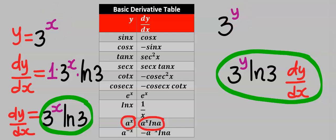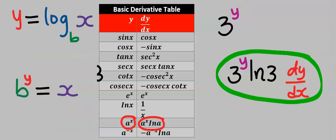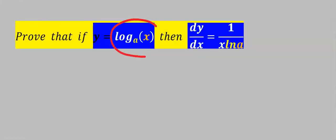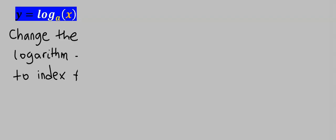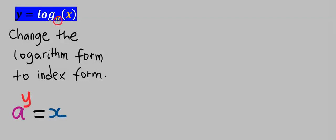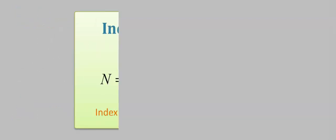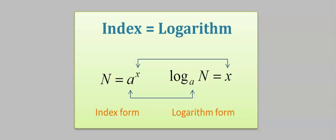With these basics in mind, we can now prove that the derivative of log X of base A is 1 divided by X times the natural log of A. To prove this, step number 1: change the logarithmic form to index form. That is, this A at the base — we raise this Y up according to the rule of converting log form to index form.